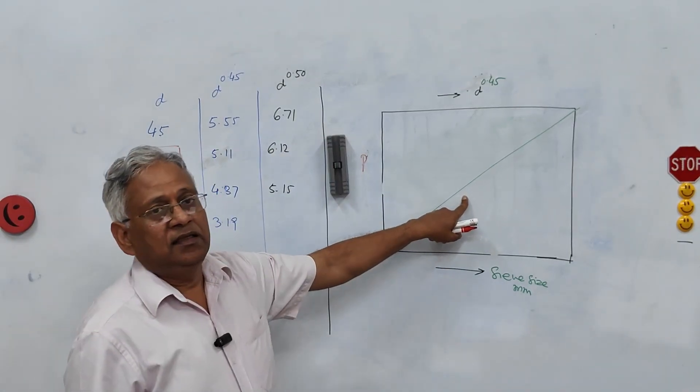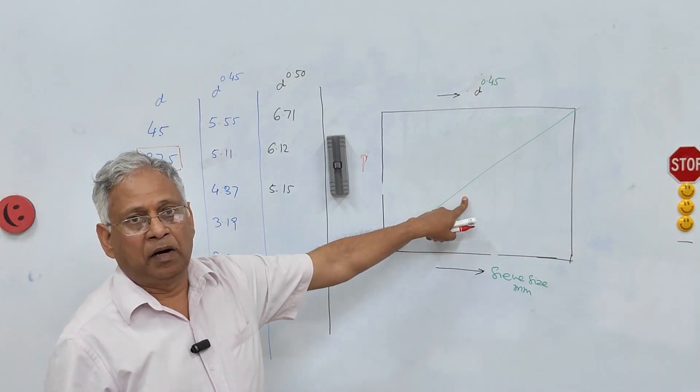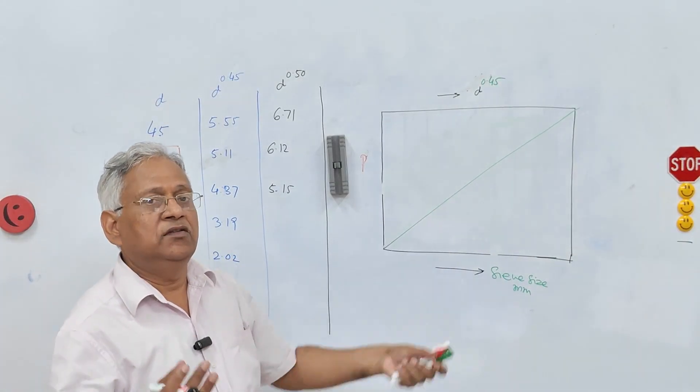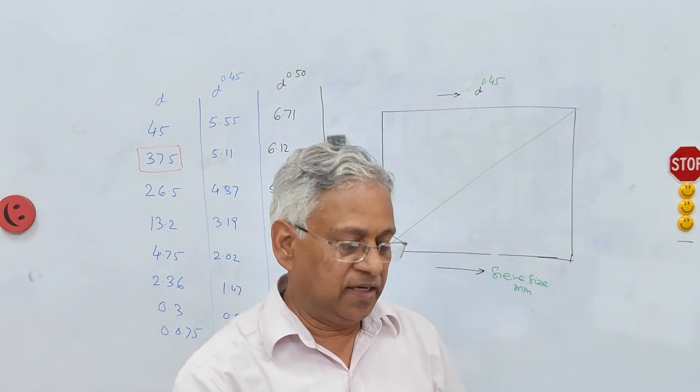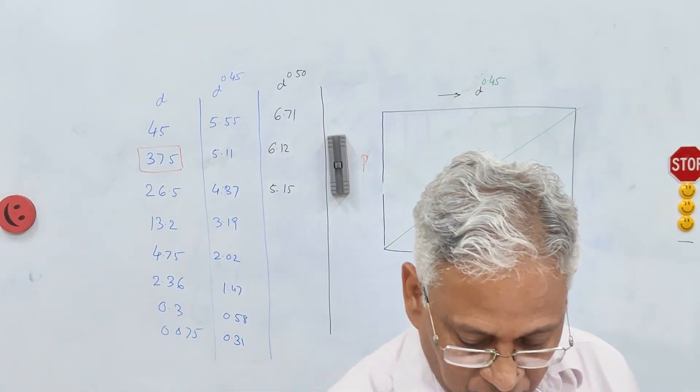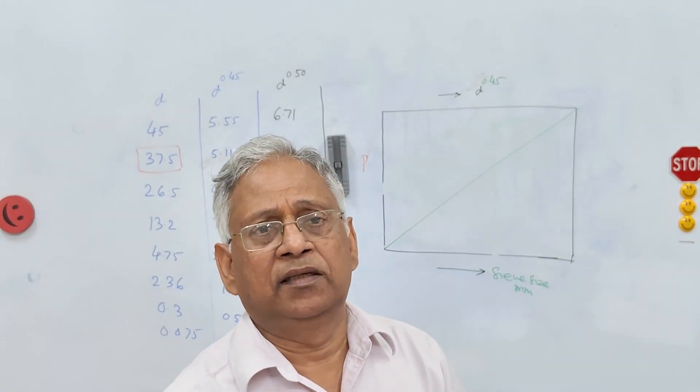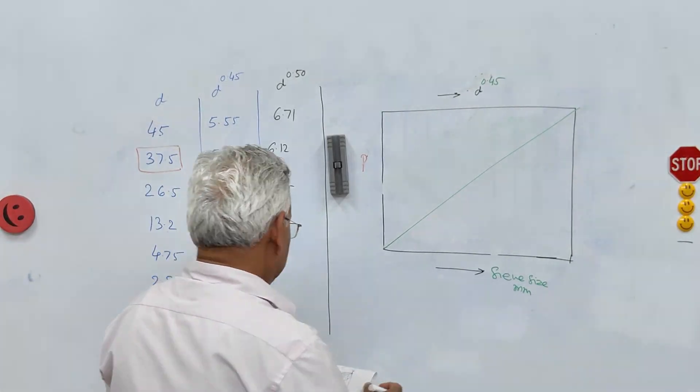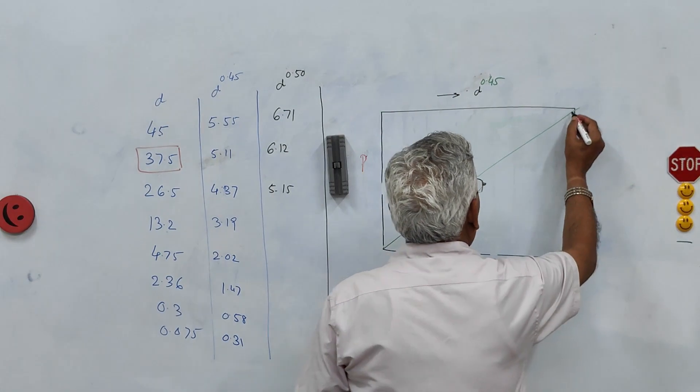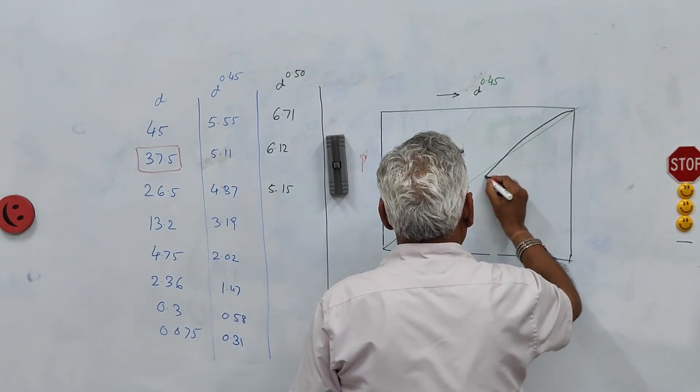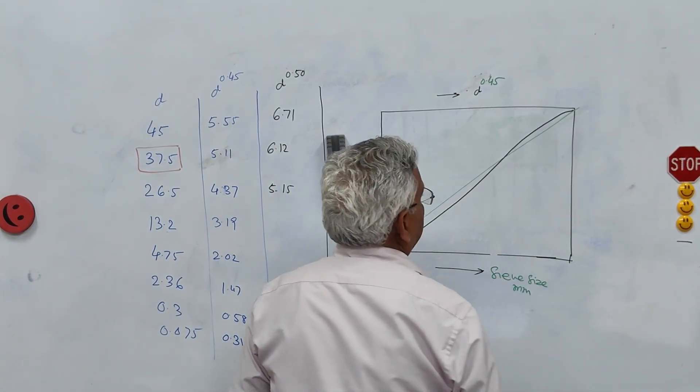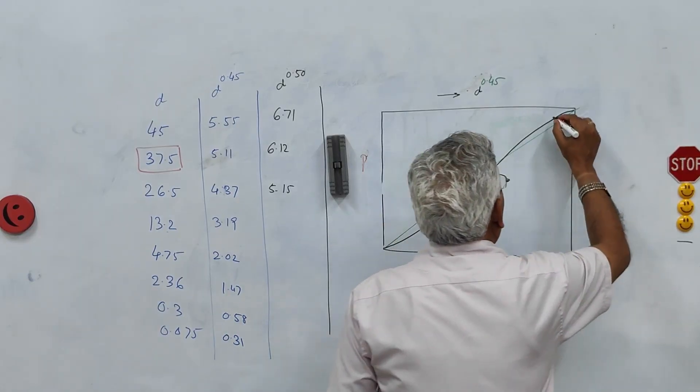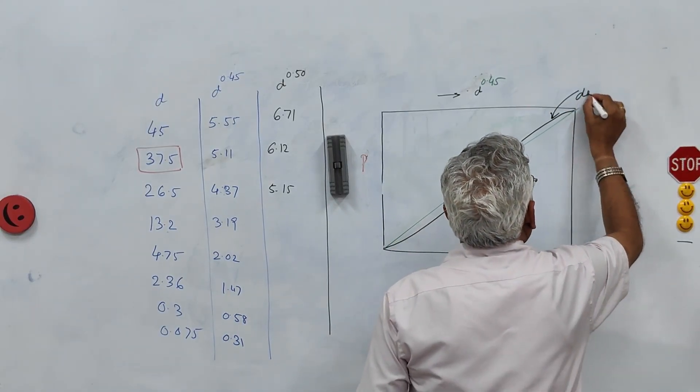Now let us say this is the 0.45 power line and you plot your actual grading on this line. Now you can achieve different types of gradings in the field. And this grading for example this grading is dense graded mix. That gives you a dense graded mix.